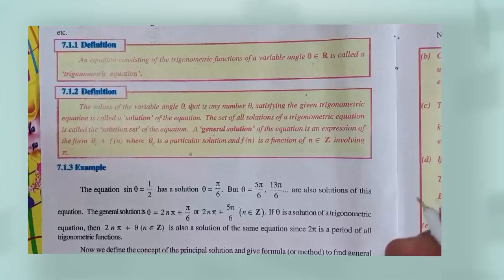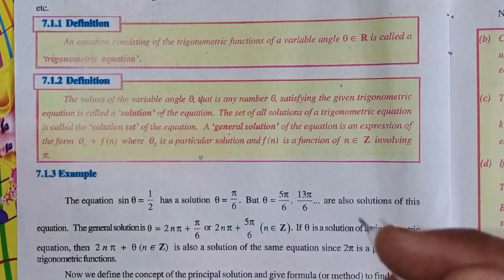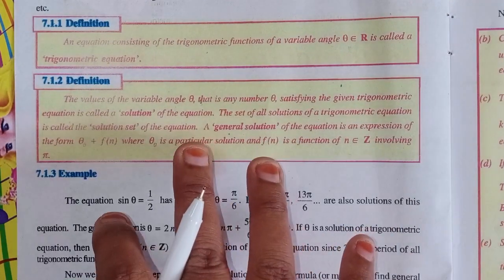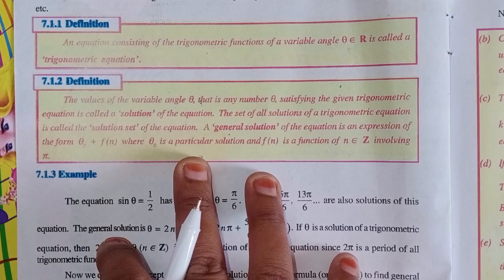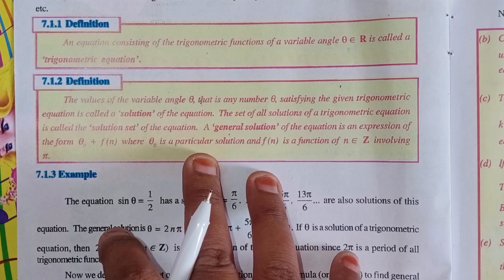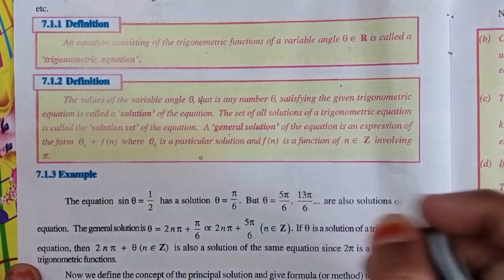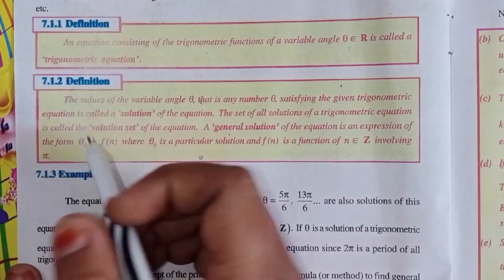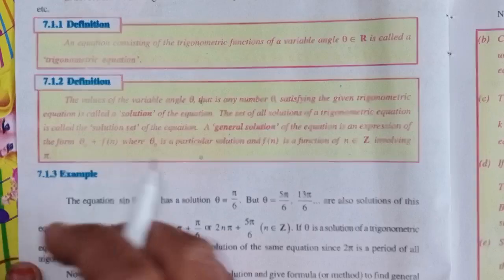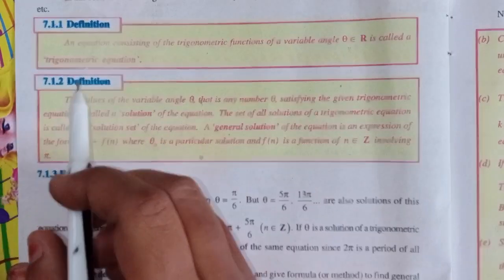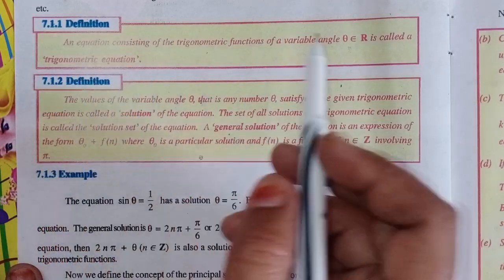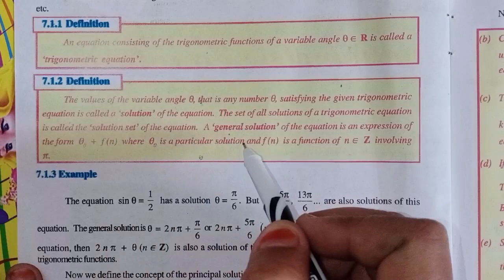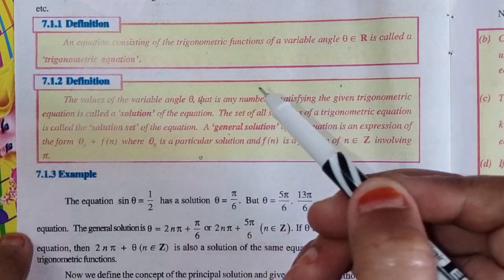This is Shahin and welcome to my channel. Today we will discuss Intermediate First Year 1A, Chapter Number 7: Trigonometric Equations. First of all, I will explain the definitions — trigonometric equation, solution, general solution, and principal solution.